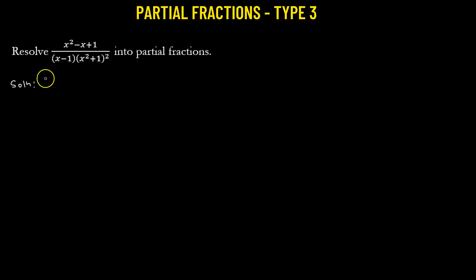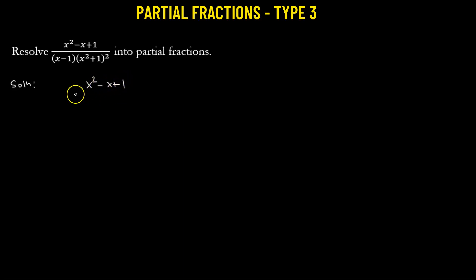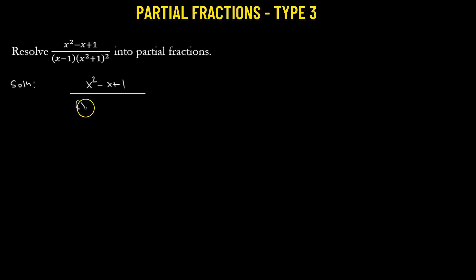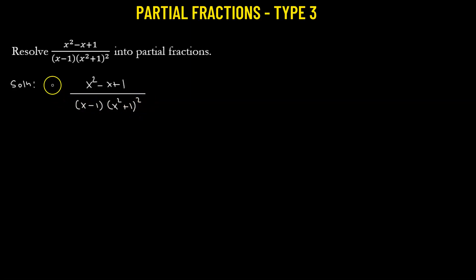If we observe the given rational fraction, which is given by x squared minus x plus 1 as the numerator, divided by the denominator — the denominator consists of three factors: x minus 1, then x squared plus 1, and x squared plus 1 repeating again. So there are three factors, which means this rational fraction can be resolved into three partial fractions.